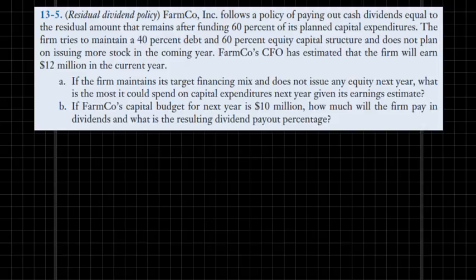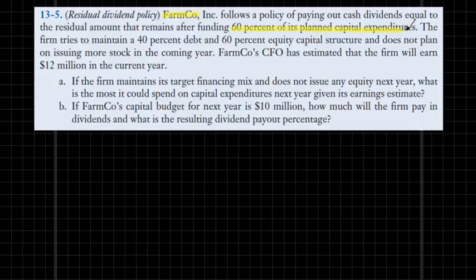Let's go ahead and highlight some key facts provided in the problem. Farmco follows a policy of paying out cash dividends equal to the residual amount that remains after funding 60% of its planned capital expenditure. The firm tries to maintain a 40% debt and 60% equity capital structure and does not plan on issuing new stock in the coming year.